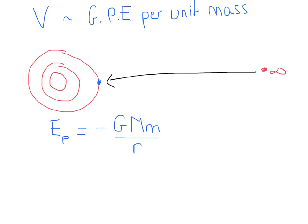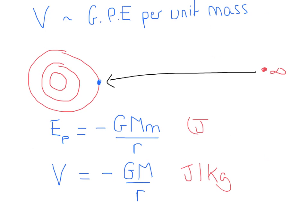What we were looking for is the potential, which is the GPE per unit mass. So just like before, we cancel that small m out, and that gets us the potential: V = -GM over R. The units of potential are Joules per kilogram, whereas the potential energy is just measured in Joules. You'll notice the potential is proportional to one over the distance — it's not R squared, just the distance away.